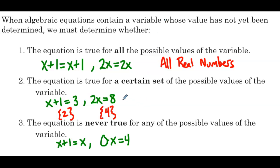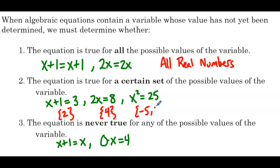Here's one more example: let's look at an equation that's true for more than one value of x. A good example would be x squared equals 25. That equation is going to be true for positive 5 as well as negative 5 — a good example of an equation with more than one solution value. And in category 3, regardless of the x value you pick, it's never going to be true — we refer to that solution set as no solution.